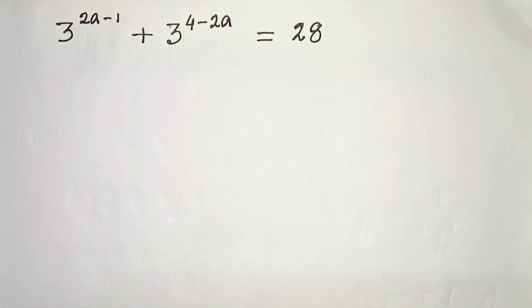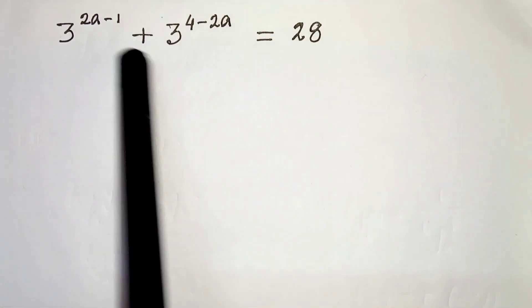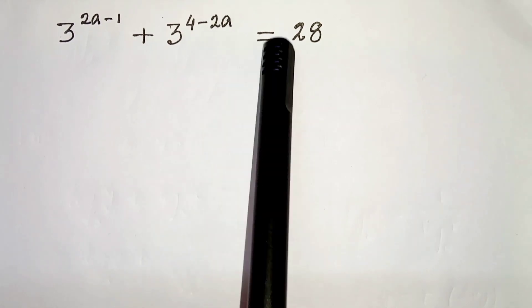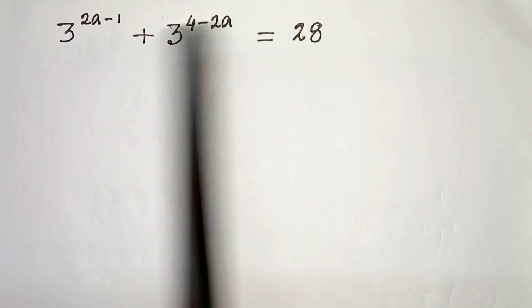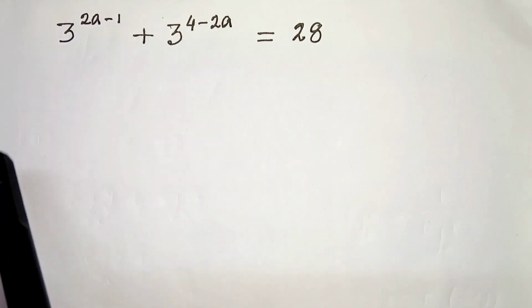Hello everyone, in this video we have 3 to the power 2a minus 1 plus 3 to the power 4 minus 2a equals 28. We have to solve this and find the value of a. So let's start.